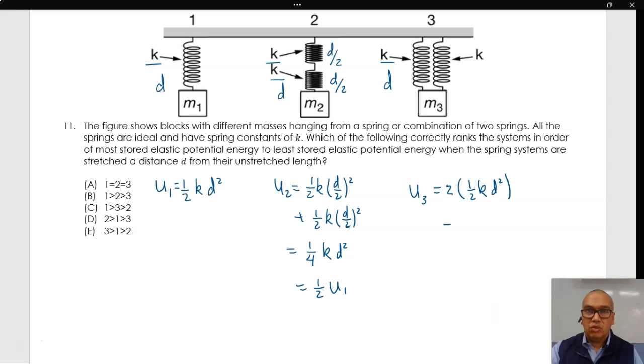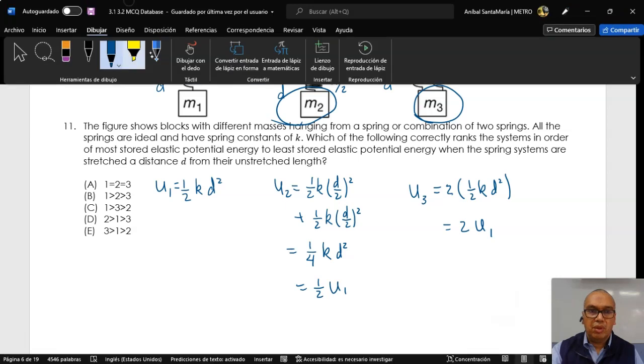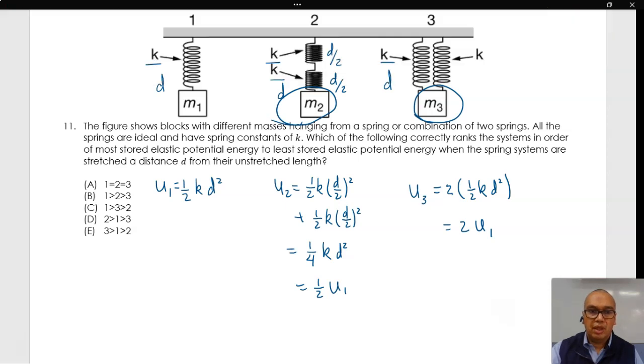This is equal to twice the potential energy in the first case. Therefore, the potential energy is largest in system 3 and least in system 2. This corresponds to option E.